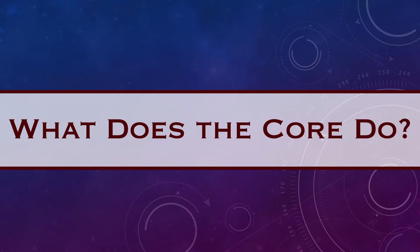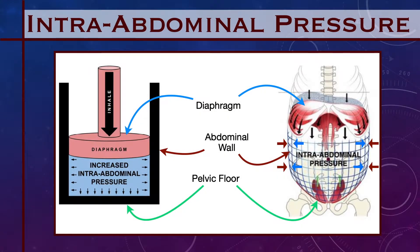Now that we have a better understanding of what the core is, the next question is: what does the core actually do? How does the core create stability? Core stability begins with being able to generate and regulate intra-abdominal pressure. The image on the left depicts the diaphragm functioning like a piston within a cylinder. As the diaphragm descends, a negative pressure or vacuum builds in the thorax, allowing air to enter the lungs. At the same time, the descending diaphragm is also causing a positive pressure to build in the abdominal cavity — this is called intra-abdominal pressure.